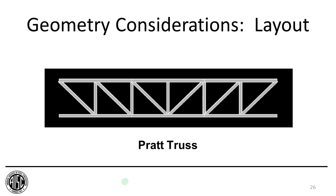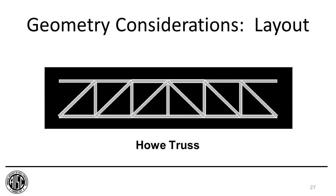The most commonly used web layouts: the Pratt truss puts the longest diagonal members in tension and the shortest vertical web members in compression, with load flow through both verticals and diagonals. The Howe truss flips that idea, putting longer members in compression and shorter members in tension, getting the load to the supports a little more quickly and often resulting in an economical truss as well.